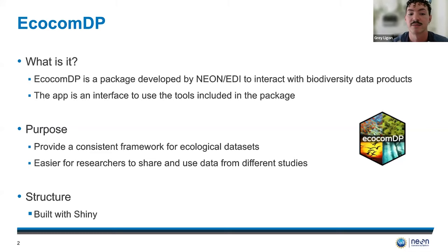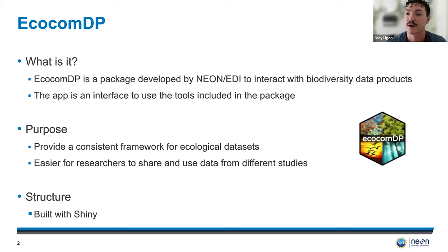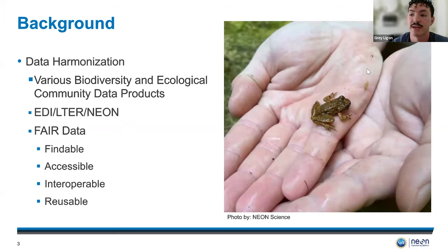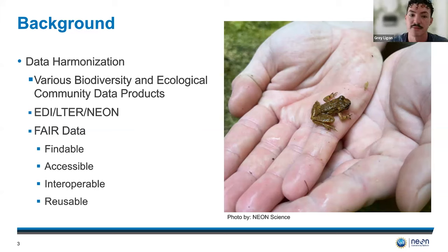The point of this is to provide a consistent framework for different ecological data sets — really just to make it easier for researchers to share and use data from different studies and across different regions that may have a different framework and setup. It was built using Shiny, and it is a tool for data harmonization. We're taking various biodiversity and ecological community data products from EDI, LTER, and NEON and putting them all together in one consistent framework. The goal is to have that data be FAIR: findable, accessible, interoperable, and reusable.